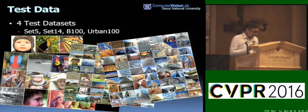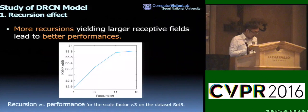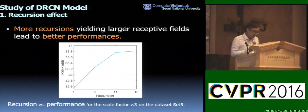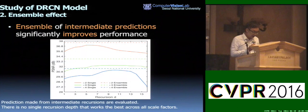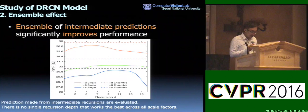For evaluation, we use Set5, Set14, BSDS100 images originally for segmentation, and Urban100 images consisting of large structural images from urban scenes. In our experimental results, we observe that more maximum recursions — which give a larger receptive field — lead to better performance. After evaluating each recursion result independently, we found that ensembling intermediate predictions gives a very large improvement. For larger scale factors in super-resolution, more recursions are needed, which aligns with our expectation that the model will softly pick the optimal recursion number.